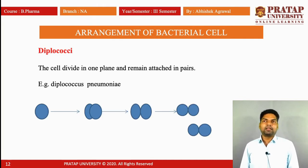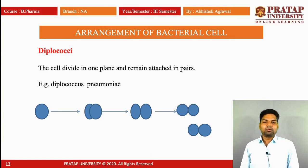First is diplococci. The cell divides in one plane — either horizontal or vertical — and remains attached in pairs. Example: Diplococcus pneumoniae. In the diagram, the coccus, meaning spherical cell, divides into two parts and remains attached; this is called diplococci.